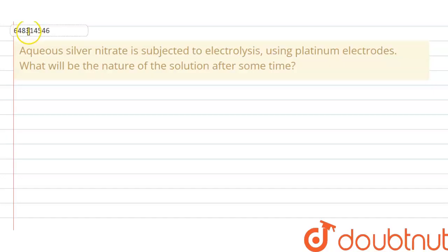Hello everyone, let's read the question. Aqueous silver nitrate is subjected to electrolysis using platinum electrodes. What will be the nature of solution after some time?